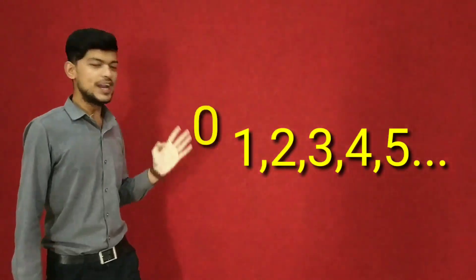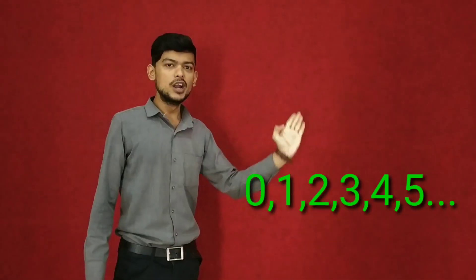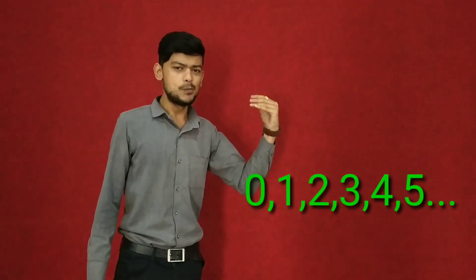Now when you add 0 in natural number, it becomes a whole number. That is 0, 1, 2, 3, 4, 5, up to 7.